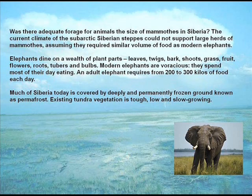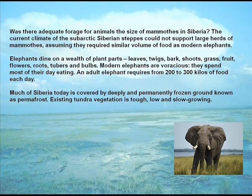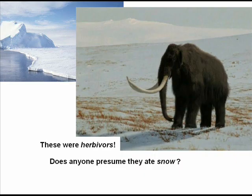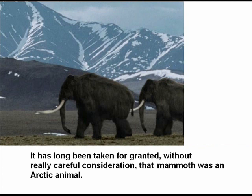Much of Siberia today is covered by deeply and permanently frozen ground known as permafrost. Existing tundra vegetation is tough, low and slow growing. These were herbivores — does anyone presume they ate snow? It has long been taken for granted, without really careful consideration, that the mammoth was an arctic animal.